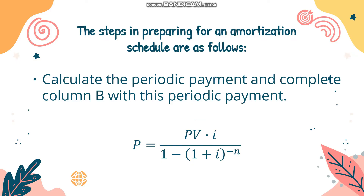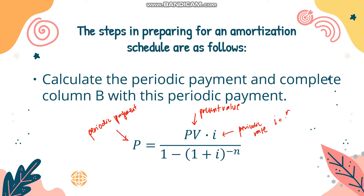First, calculate the periodic payment and complete column B. To solve for the periodic payment, we follow this formula: P refers to the periodic payment, PV is the present value, I refers to the periodic rate which is solved by dividing the rate R over the number of compounding periods M, and N refers to the number of conversion periods solved by multiplying T and M. T refers to time in years and M is the compounding period. This formula is used to compute the periodic payment or amortization.